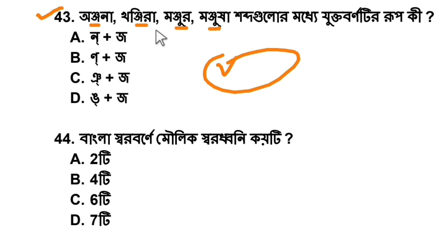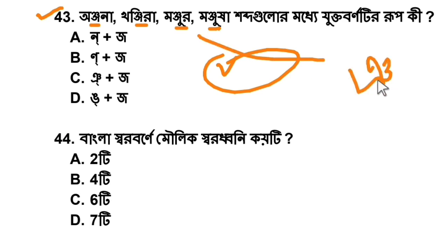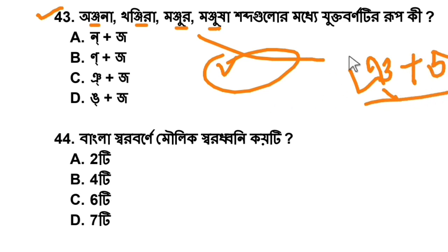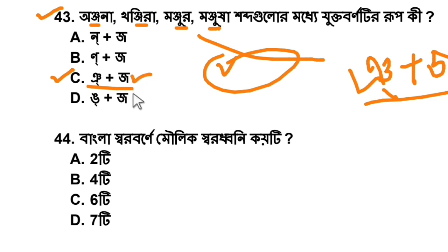This is an important question. When we identify it as a sandhi (junction), we will give option C as the answer. The question involves juktabarna (consonant clusters) — for example, words like 'anjona,' 'khanjira,' 'monjur,' and 'mondosha' — identifying which one contains a juktabarna (consonant cluster).